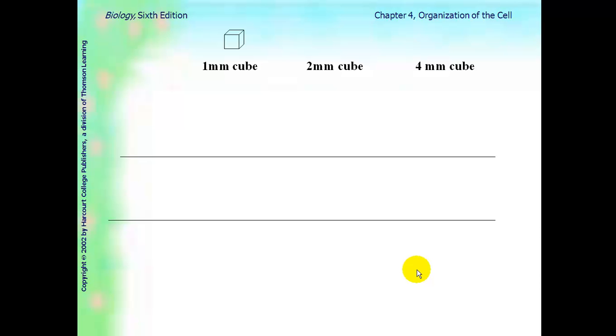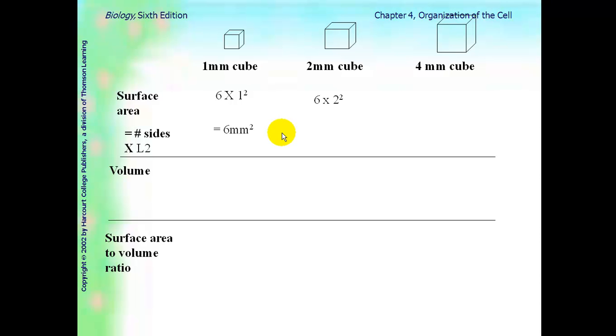Another thing about size of a cell that I want to look at is surface area to volume ratio. So, suppose we have three cells, and let's say that they're in cube size, 1 millimeter, 2 millimeters cube, and a 4 millimeter cube cell. And I want to look at surface area and volume, and then take a ratio of that. So, first thing we're going to do is calculate surface area for these three cubes. Surface area, you learned in geometry, is the number of sides times the length squared. So, in a 1 millimeter cube, there are six sides times 1 squared, which is 6 millimeters squared. In a 2 millimeter cube, it would be 6 times 2 squared, or 24 millimeters squared. 6 times 4 squared for the 4 millimeter cube would be 96 millimeters squared. So, it makes sense that the larger cell would have the biggest surface area.